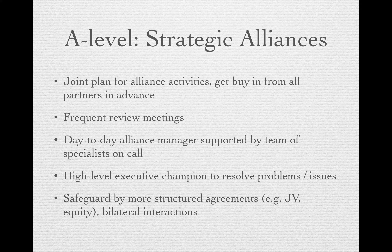A-level partnerships are called strategic alliances. For a really important strategic alliance, you might develop an annual business plan or marketing plan, have all parties buy into the plan, and review results frequently — usually every quarter. If it gets difficult to schedule these review meetings, it means the alliance may have dropped in importance for one of the partners. You need both an operational alliance manager for day-to-day activities and a top management executive champion on each side, to whom the alliance managers could turn for escalating problems. These A-level strategic alliances need to be safeguarded by more structured agreements like joint ventures or minority equity investments, and are likely to involve bilateral interactions based on trust, communication, and commitment.